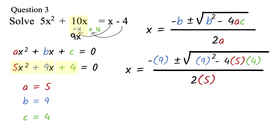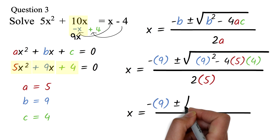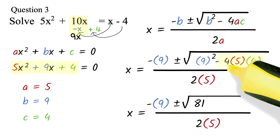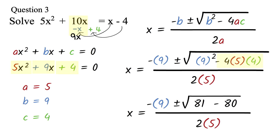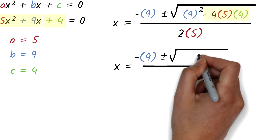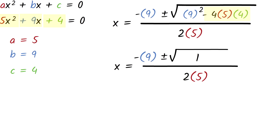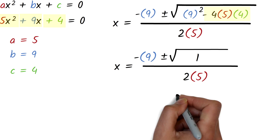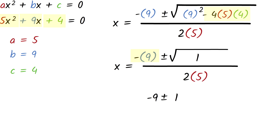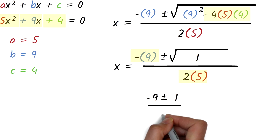We work out what is under the root sign first. 9 squared is 9 times 9, which is 81. Minus 4 times 5 times 4 will be 80. So we have 81 minus 80 to get 1. We can then find the square root of 1, which is 1. This part is simply negative 9. The 2 times 5 in the denominator will be 10.